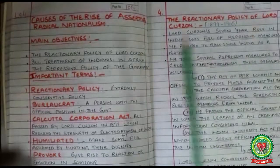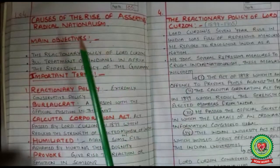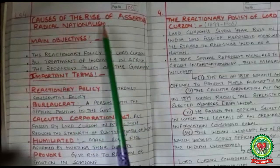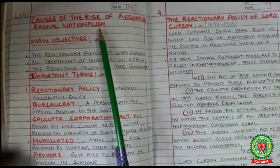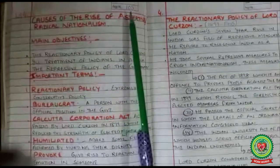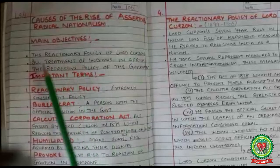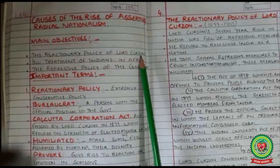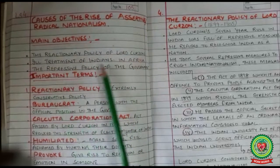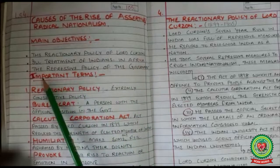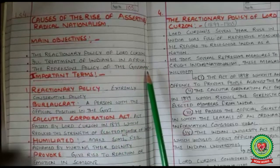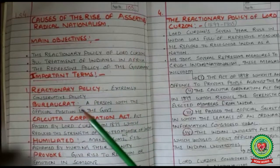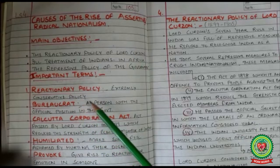Hello class 9th, today we will discuss the next causes of the rise of assertive or radical nationalism, which is a part of lesson 4, page number 105. The main objectives are: the reactionary policy of Lord Curzon, ill treatment of Indians in Africa, and the repressive policy of government.